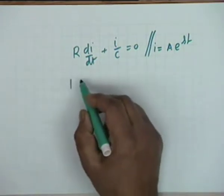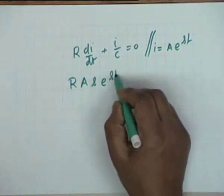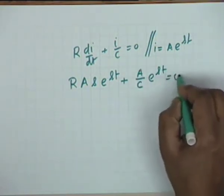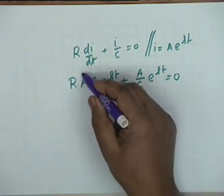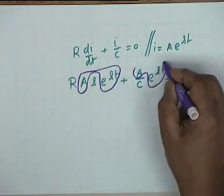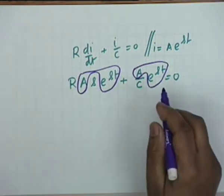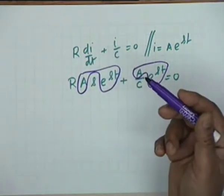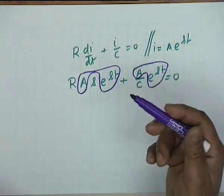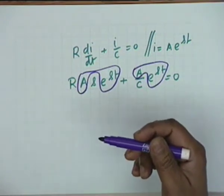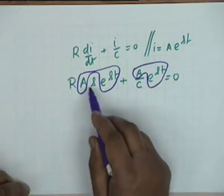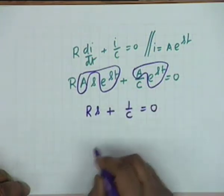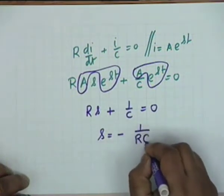Substituting the trial solution I = A·e^(s·t) into R·dI/dT + I/C = 0, we get R·A·s·e^(st) + A/C·e^(st) = 0. Since A·e^(st) cannot be zero — the current is non-zero when the capacitor has initial energy — the only alternative is that R·s + 1/C = 0, which means s = −1/(RC). Therefore the solution is of the form A·e^(−t/RC).